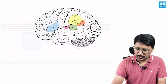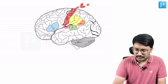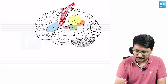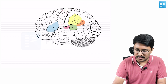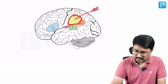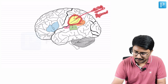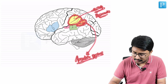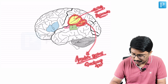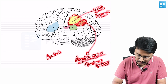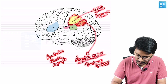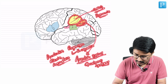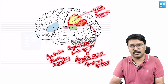The sensory cortex is located in Brodmann areas 1, 2, and 3 — just posterior to the central sulcus. Brodmann area 4 is the motor cortex just anterior to the central sulcus. Behind the sensory cortex is the supramarginal gyrus — its lesion leads to motor apraxia. Just behind that is the angular gyrus, whose lesion causes Gerstmann's syndrome: acalculia, alexia, agraphia, left-right agnosia, and finger agnosia.